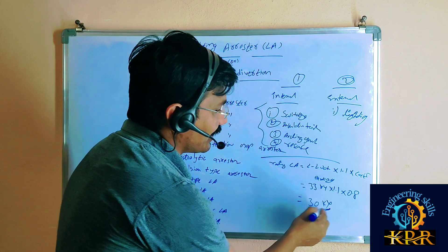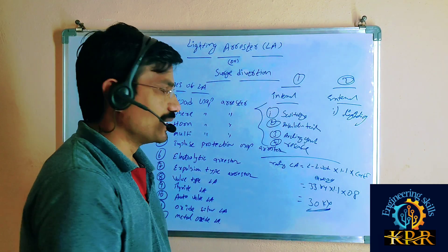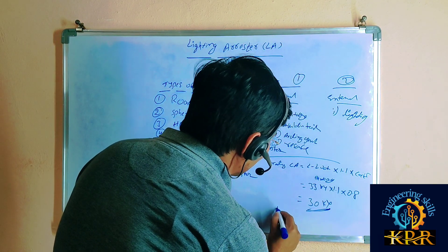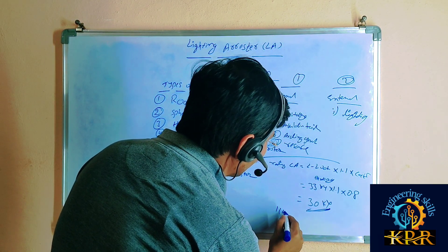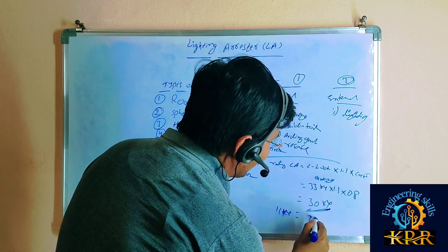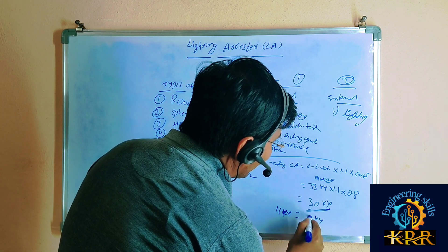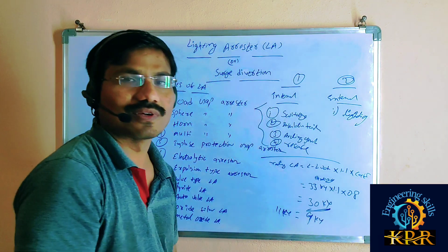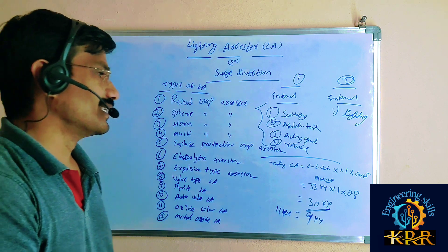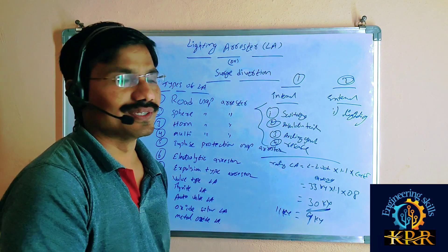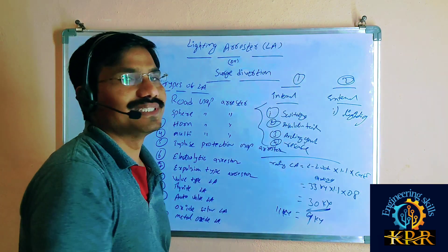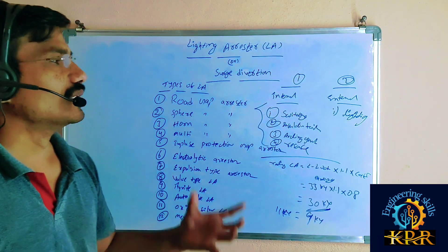Similarly, if the operating voltage is 11 kV, then a 9 kV lightning arrestor is required. These lightning arrestors are mainly used in transformer areas or substations.